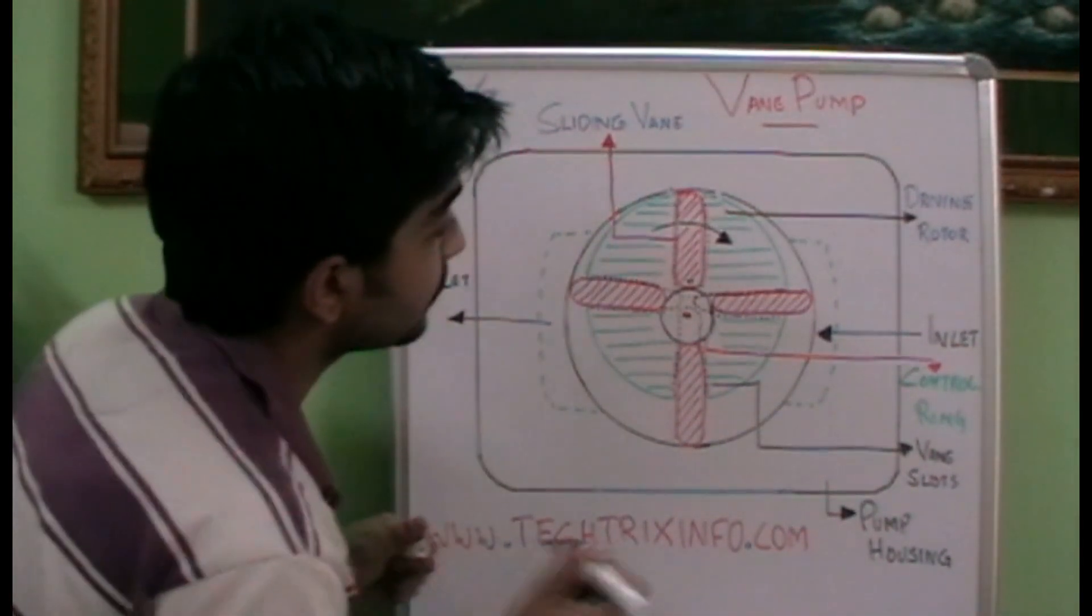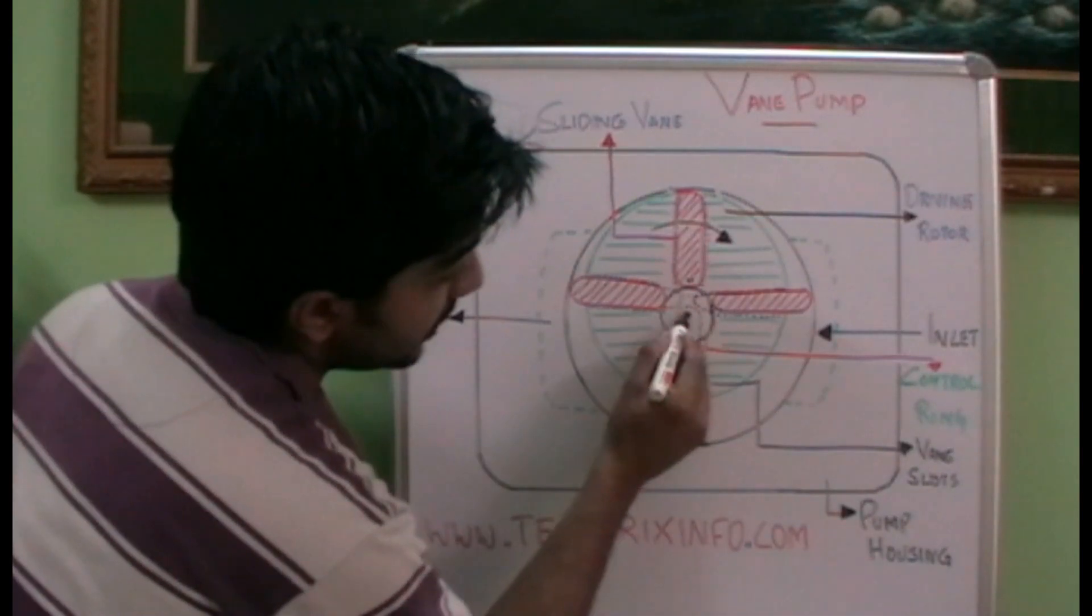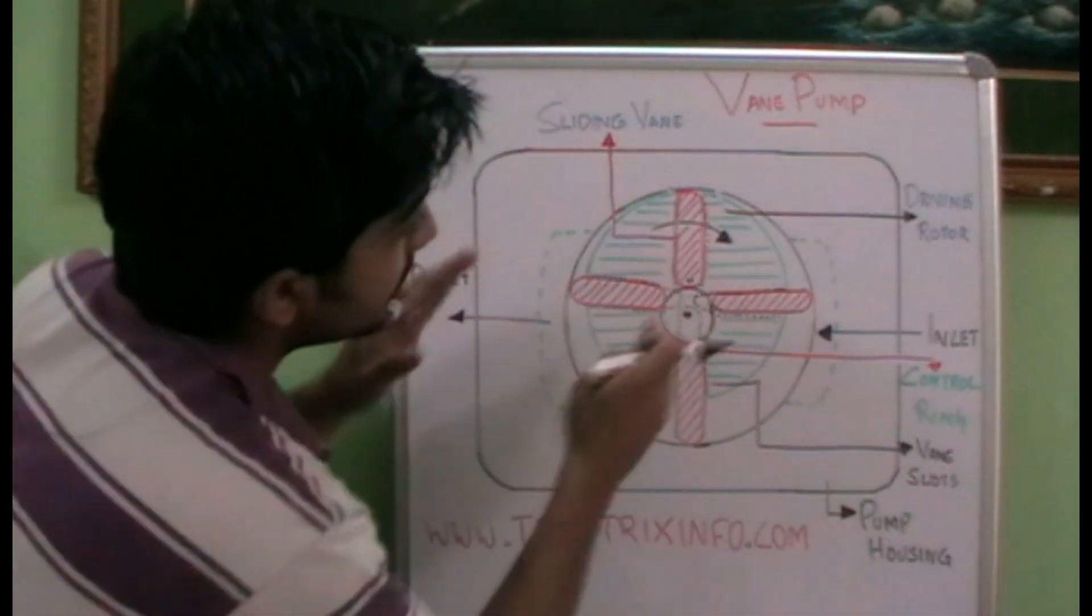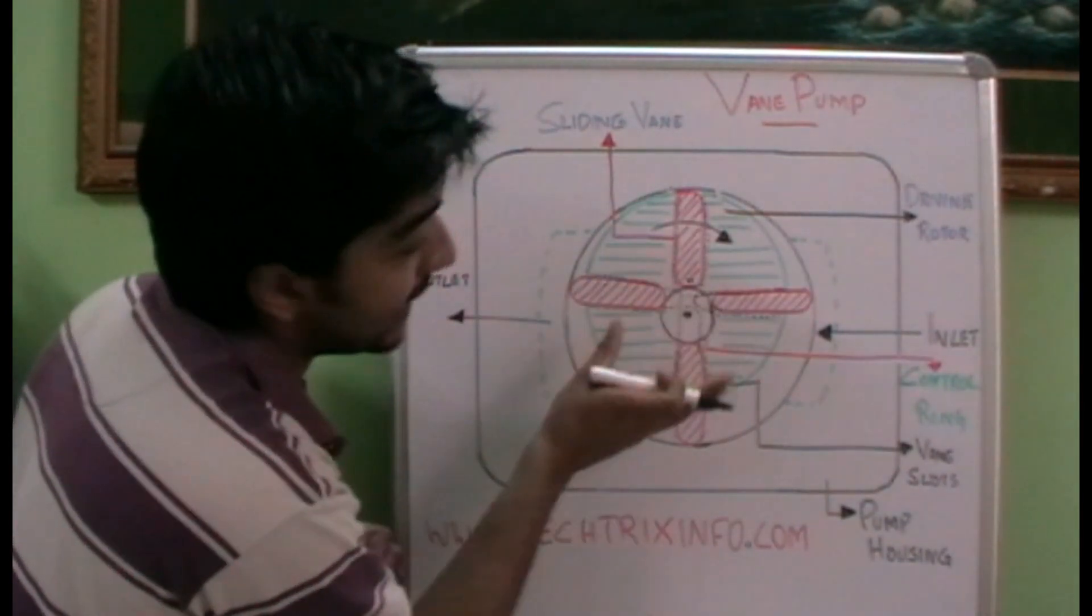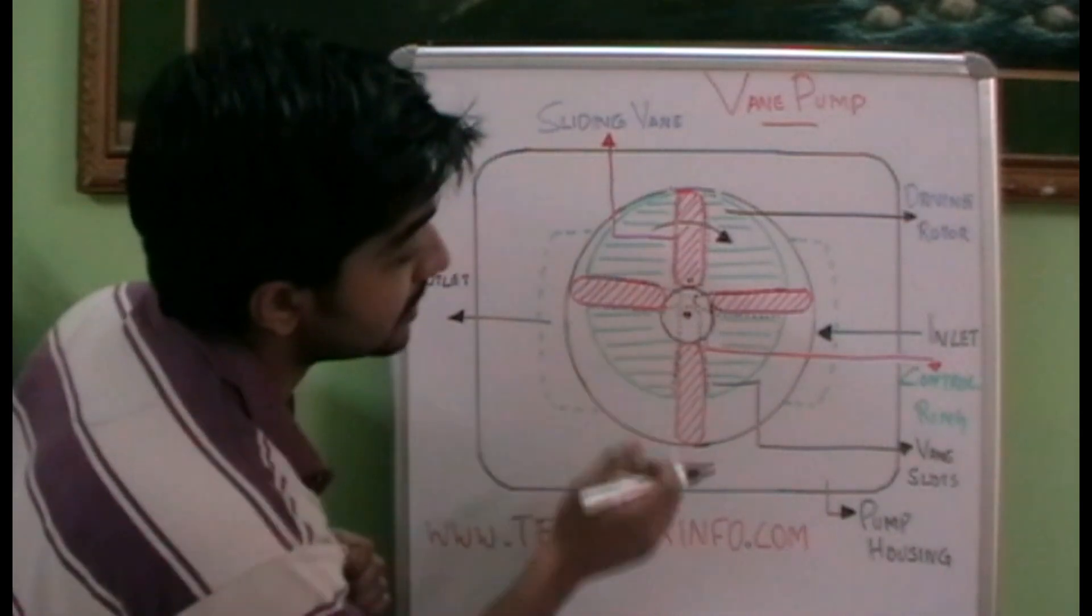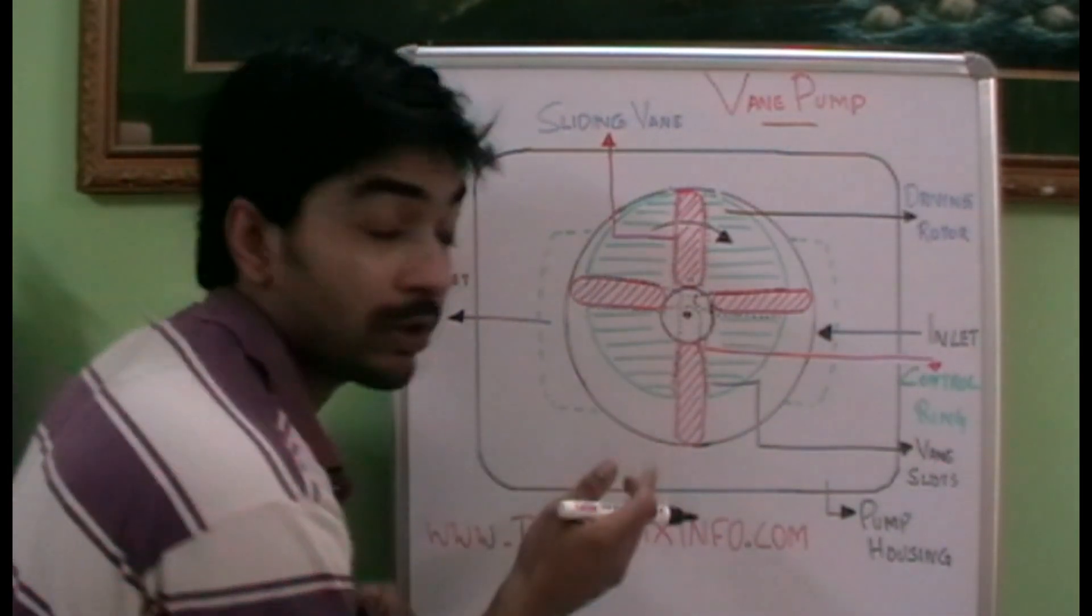So let's see how a vane pump works. This is the center of the pump housing as you can see over here. But you can see that this green color driving rotor is eccentrically placed from the center of the pump housing. This is somewhere the center of this driving rotor is coming.